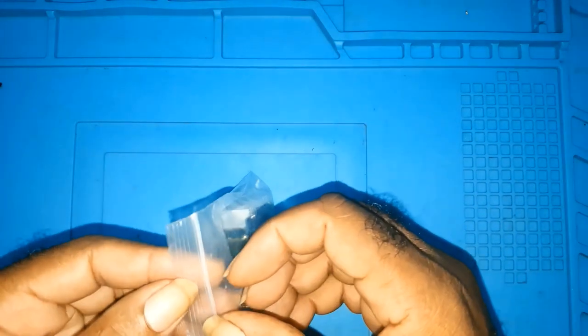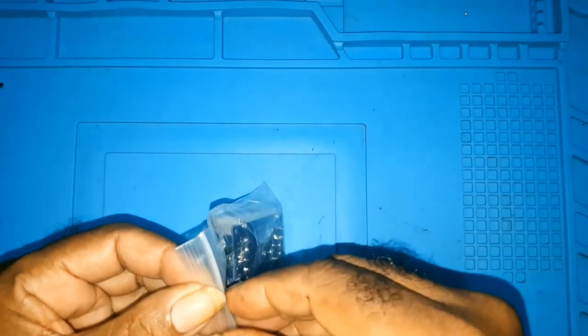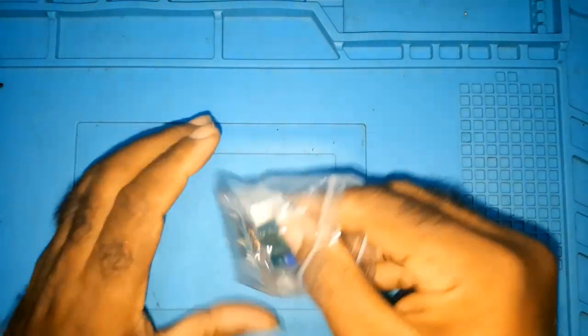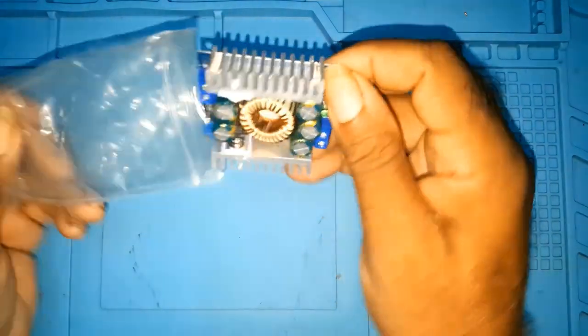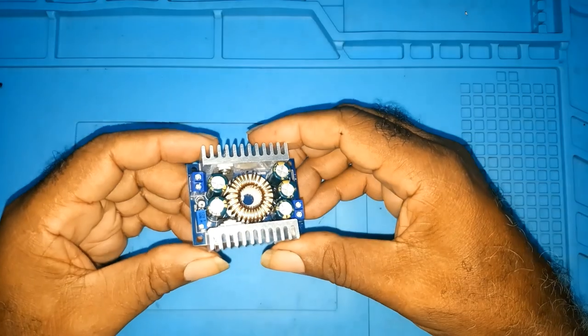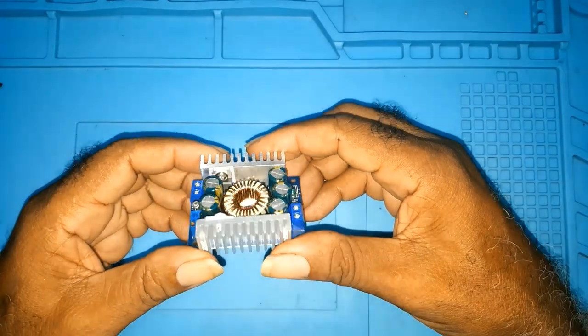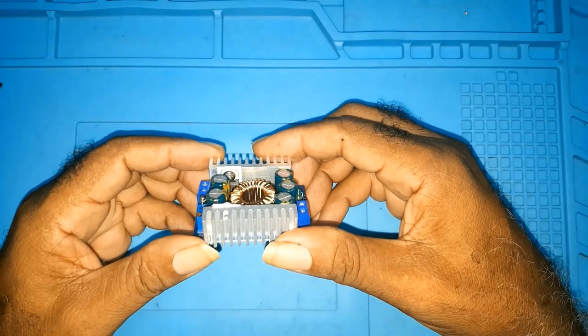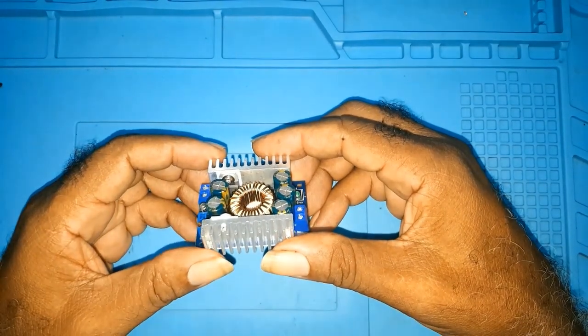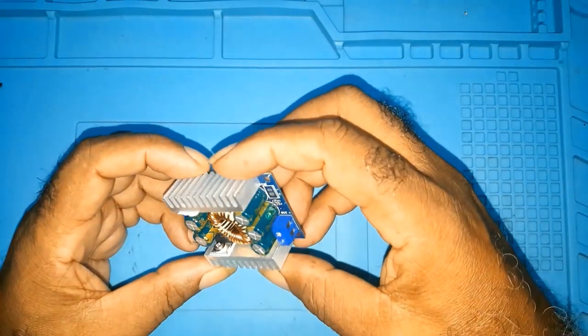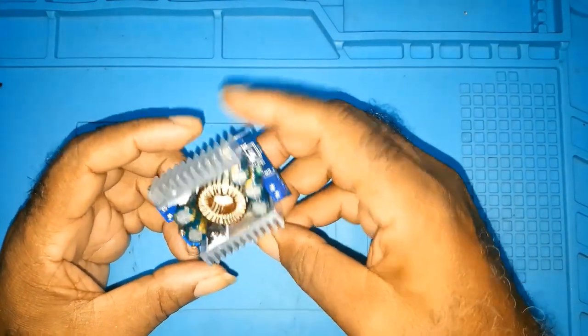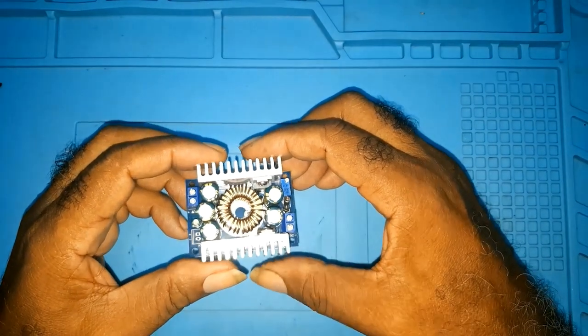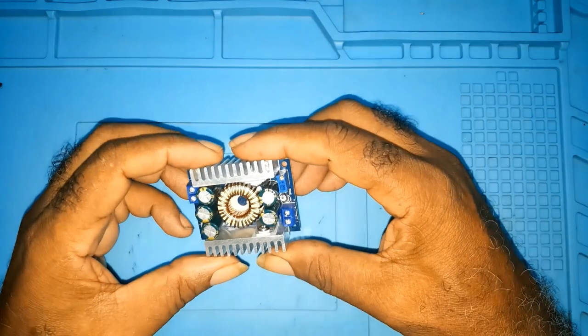This is the gadget. It's a 12 amp DC step-down buck converter. The input voltage is 4.5 to 30 volts, which means you can put 4.5 to 30 volts in it, and the output voltage is from 0.8 volts to 30 volts.